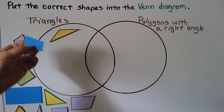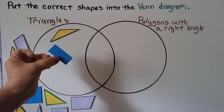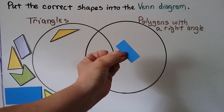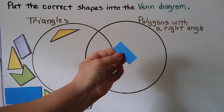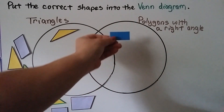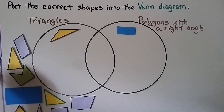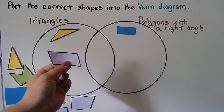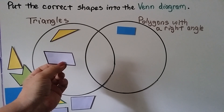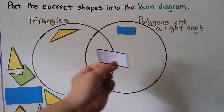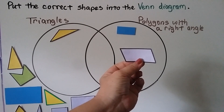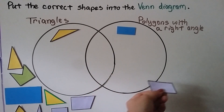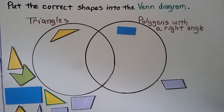What about this one? This is a rectangle, so it's not a triangle. Does it have right angles? Yes, it has four. So we could put it in the polygon with right angles circle. What about this shape? That's a trapezoid — not a triangle. Does it have any right angles? No, it doesn't. So we're going to put it outside the Venn Diagram entirely. It doesn't belong in the Venn Diagram at all.